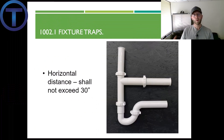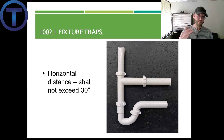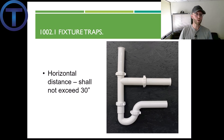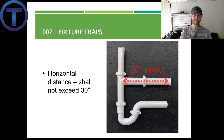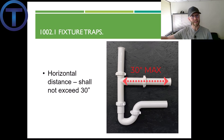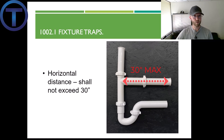Another requirement for traps is that once you've come above the trap, you can turn horizontal, but you cannot go any more than 30 inches. Here we have a disposal waste kit — it's not going to exceed 30 inches. But if we were to connect further, 30 inches is our max once we've passed the trap.